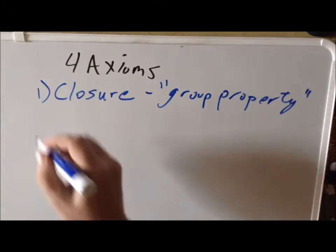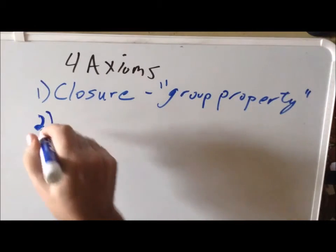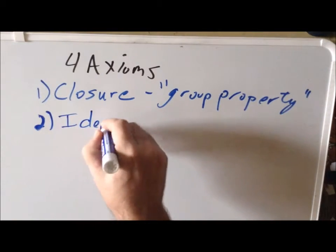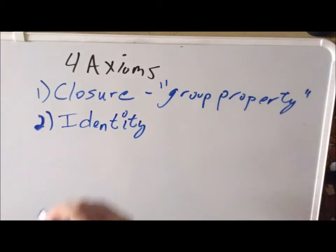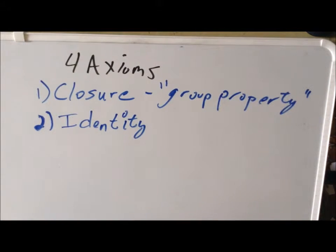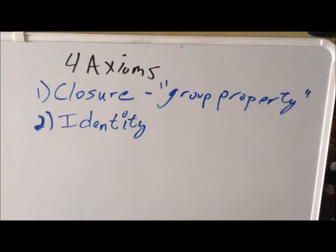The second axiom is that we need an identity. The identity axiom we're probably familiar with in multiplication or addition. We know that if we multiply a number by one, we get the number back — so in multiplication, the identity is one. If we have addition, the number zero is the identity element for addition.